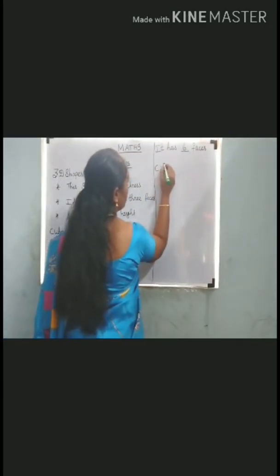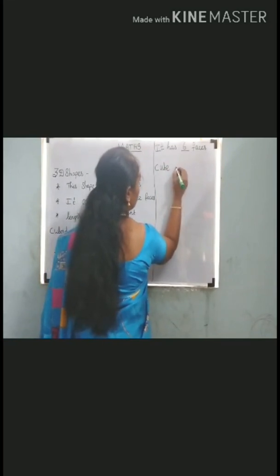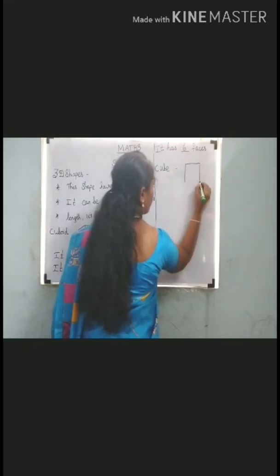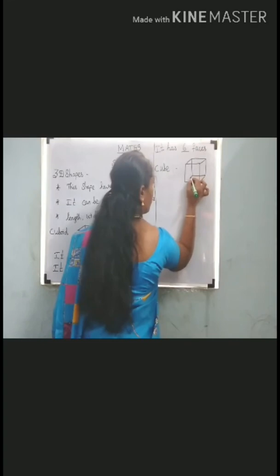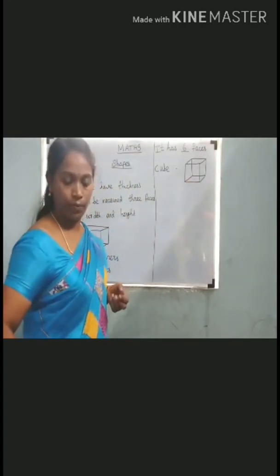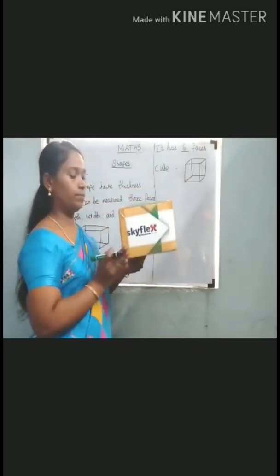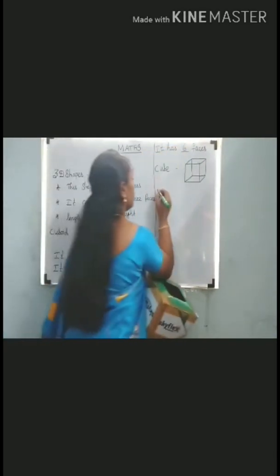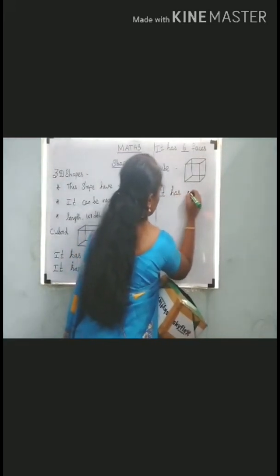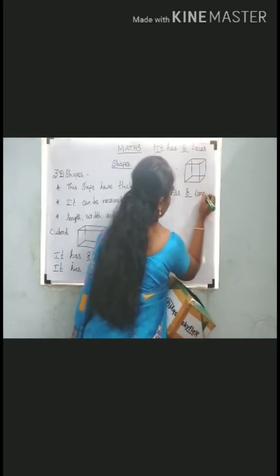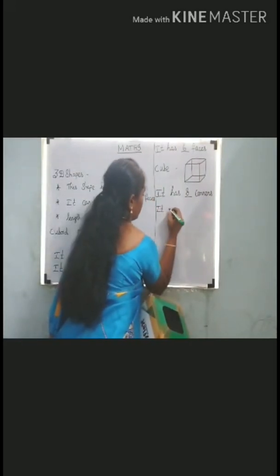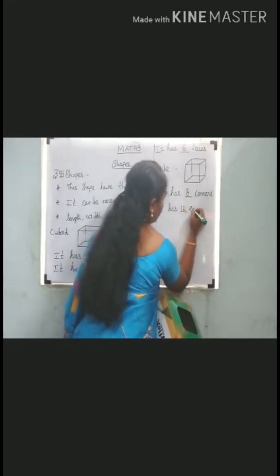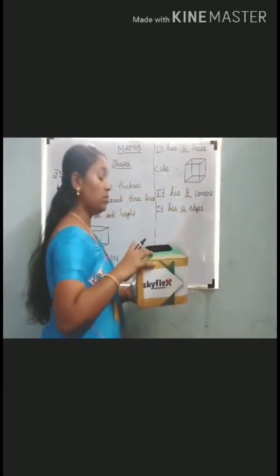Next, cube. A cube also has 8 corners, 12 edges, and 6 faces.